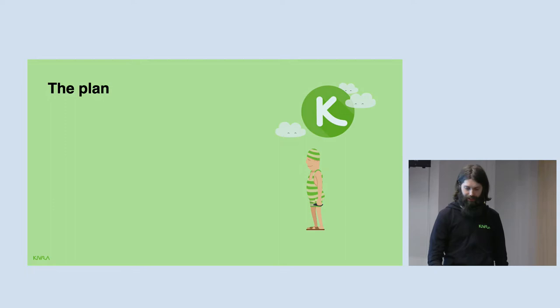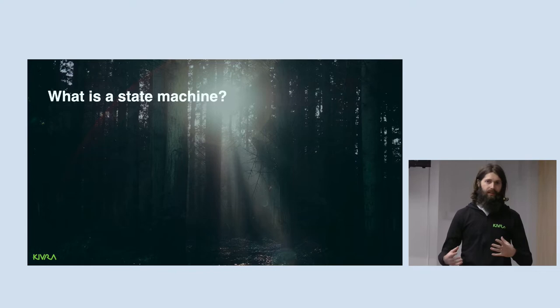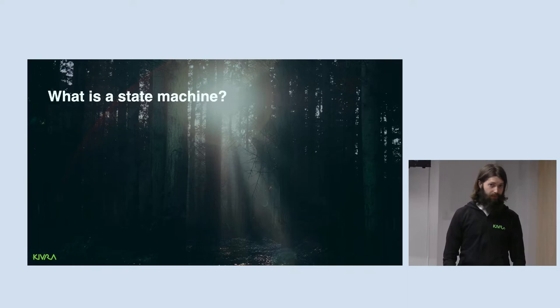What is a state machine? There are many different definitions. If you look at Wikipedia you get into finite state machines and automata — it's very formal and describes the properties and computational power compared to a Turing machine. Because it's limited — it's not a Turing machine — it means we can prove stuff about it, which is why mathematicians and programmers like them.